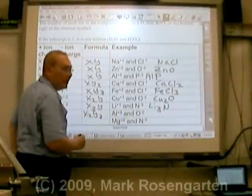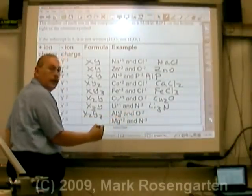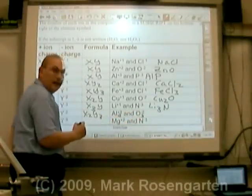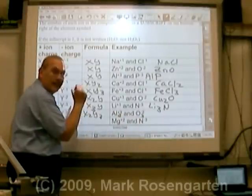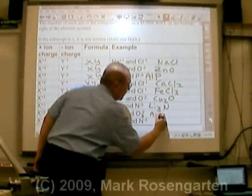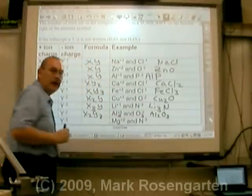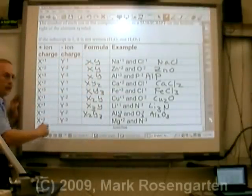Three times two is six. We're going to need two plus threes and three minus twos. Plus six, minus six. Al2O3, aluminum oxide. Same thing goes here.